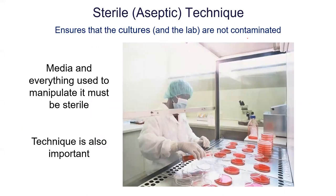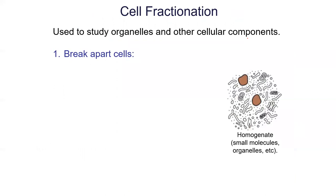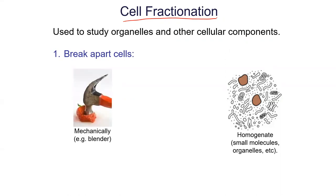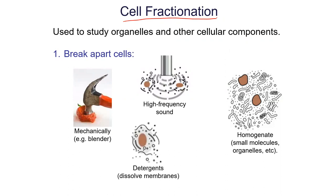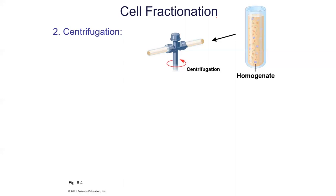One last thing to mention in terms of how we can study cells is a technique called cellular fractionation. Basically the definition is: we break cells apart and then somehow isolate the organelles. How do we do this? You can break things apart mechanically using a blender — scientific blenders are just fancy kitchen blenders. You can also use sonication, which is high-frequency sound, or you can use detergents. In the end, what you get is a homogenate — all the liquids inside the cells and the organelles in a slurry.